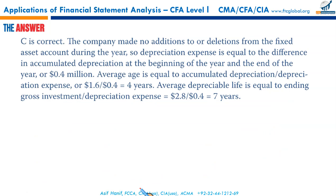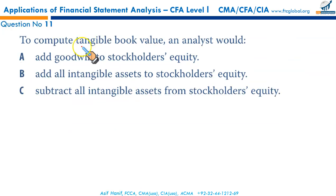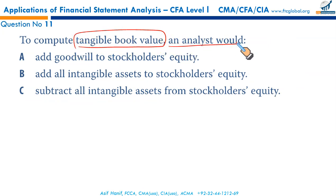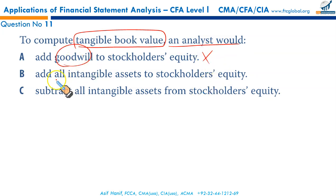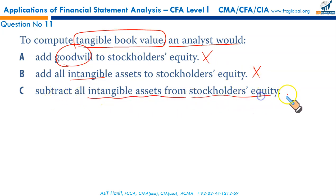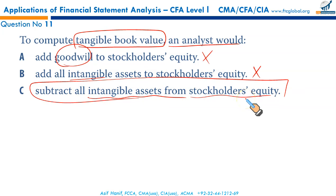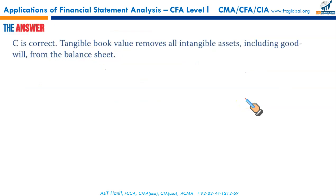To compute tangible book value, an analyst should subtract all intangible assets — such as goodwill, patents, and licenses — from stockholders' equity. Tangible book value represents the book value of only the tangible assets of the business. That makes C the correct option.